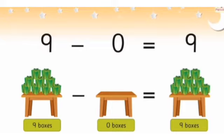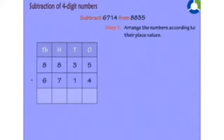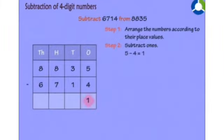Now we will do some examples of subtraction of a four-digit number. Subtract 6714 from 8835. Step 1: Arrange the numbers according to their place values. You can see students: 1's place, 10's place, 100's place, and 1000's place. Now Step 2: Subtract 1's. You can see students 5 minus 4 equals...